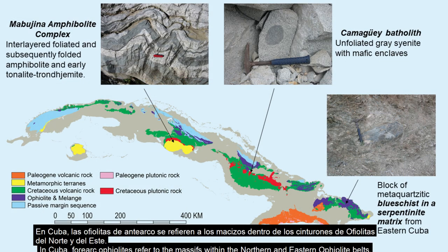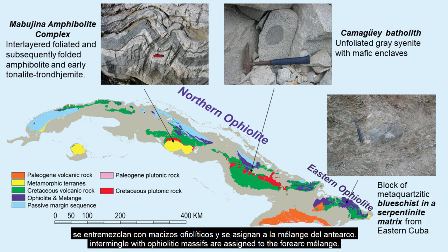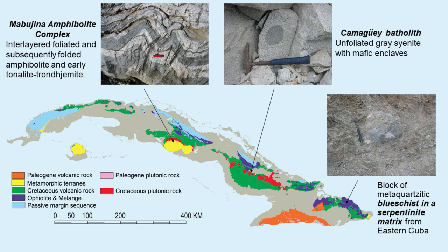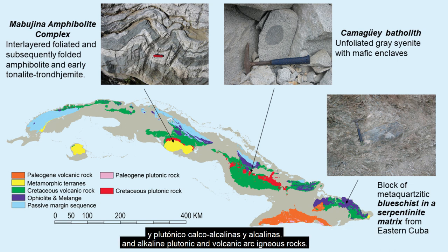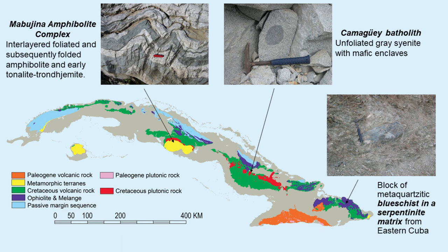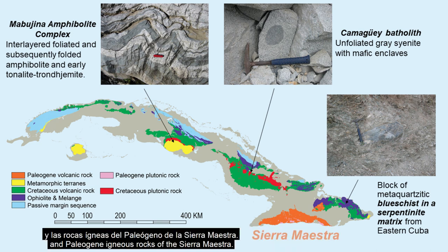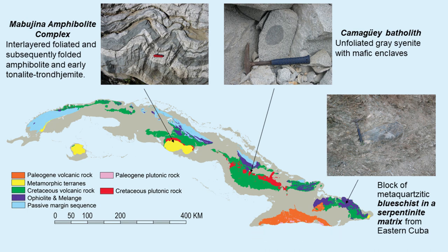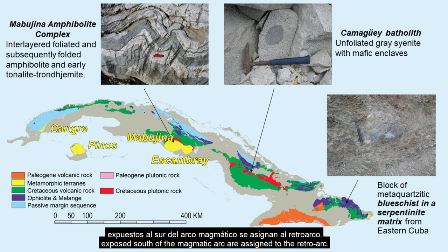In Cuba, forearc ophiolites refer to the massifs within the Northern and Eastern Ophiolite Belts. High-pressure metamorphic rocks within the serpentinite mélange intermixed with the ophiolitic massifs are assigned to the forearc mélange. Magmatic arc units include island arc tholeiitic, calc-alkaline, and alkaline plutonic and volcanic arc igneous rocks. These include the Cretaceous arc south of the Northern Ophiolite Belt and Paleogene igneous rocks of the Sierra Maestra. The Cangrui, Pinos, Mabuhina, and Escambray metamorphic terrains, exposed south of the magmatic arc, are assigned to the retroarc.